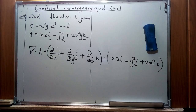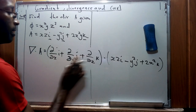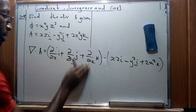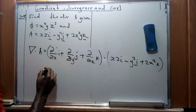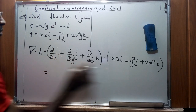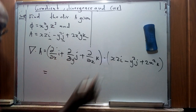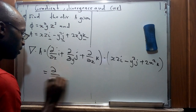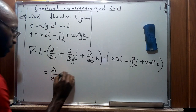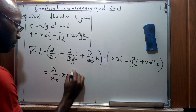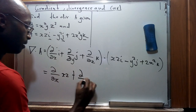We multiply the corresponding components for i, j, and k. The del section multiplied by the first component gives us the del for the x component of xz, plus del for the y component.